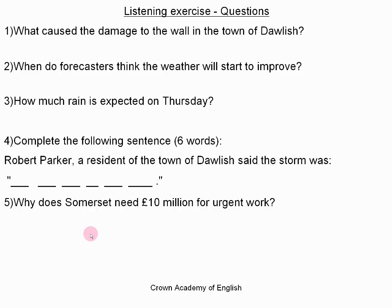In Parliament, the British Prime Minister David Cameron has promised to spend £100 million for flood works, £75 million for repairs over the next year, £10 million for urgent work in Somerset because several rivers have flooded there, and £15 million for maintenance. That is the end of the article.